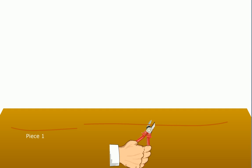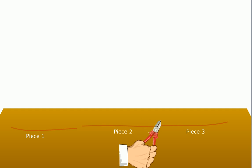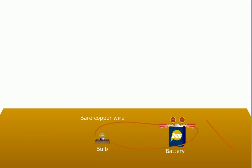Now cut the wire into three pieces. Connect the wires from the battery terminals to the bulbs as shown here. What do you observe? The bulb glows.